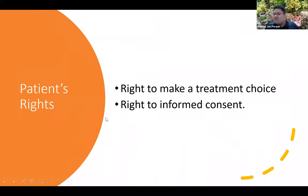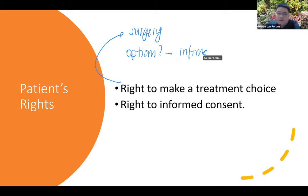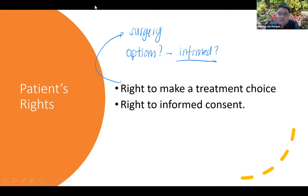Another right of your patient is the right to make a treatment choice. For example, if the doctor recommends surgery, the patient needs to be informed of all other options available. If the patient opts for medication instead of surgery, the doctor needs to discuss it further with the patient, but the doctor cannot force the patient — the patient has the right to make a treatment choice.